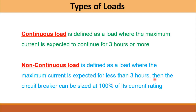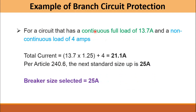Let's look at an example of branch circuit protection per NEC. We have a circuit supplying two load types: a continuous load of 13.7 amps and a non-continuous load of 4 amps. Applying the formula — 1.25 × 13.7 + 1.00 × 4 — the total comes out to 21.1 amps. Since 21.1 A is not a standard frame size, we move to the next standard size, which is 25 amps. Therefore, the proper circuit breaker rating for this combination of loads is 25 amps.